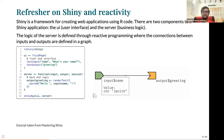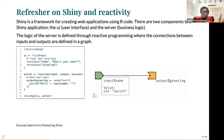Shiny is a framework for creating web applications using R code — it could be a website, dashboard, or any service that interacts with the internet through a browser. Normally you would use JavaScript, TypeScript, or other languages and deal with full-stack development terminology. Shiny was built to simplify all of that and make it easier for data scientists who have worked with R and generated insights to share those insights with everyone else.